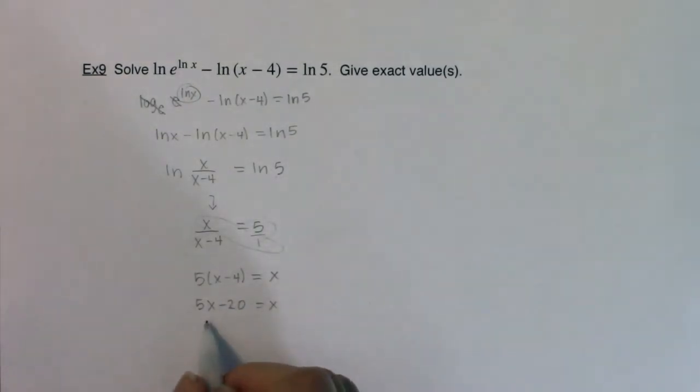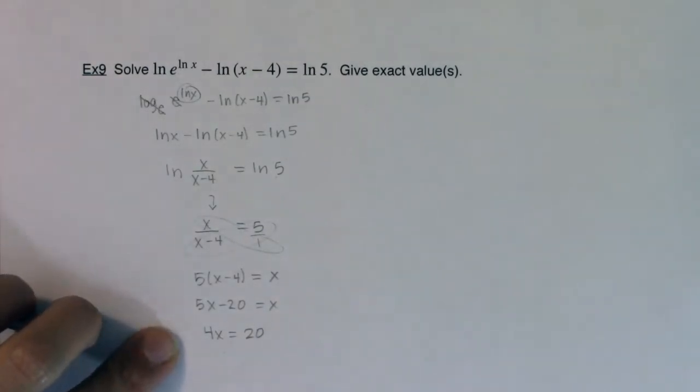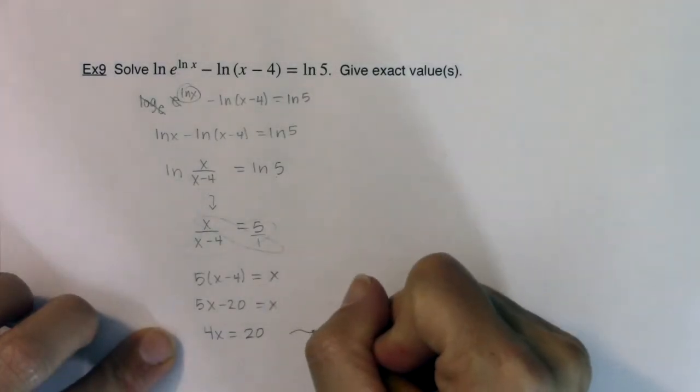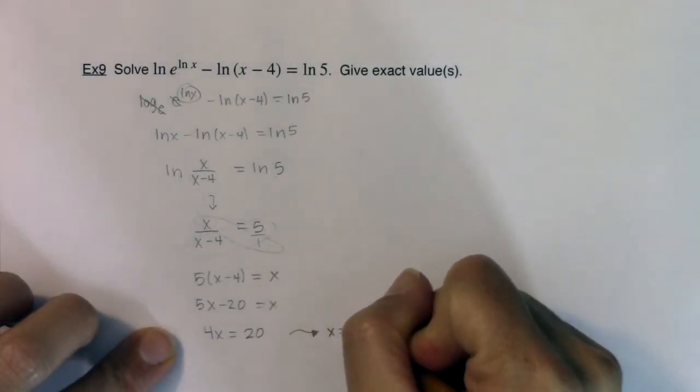And then if I subtract my x, I'm going to get 4x on this side, I get 20 on the right side. So ultimately it looks like I'm looking at x equaling 5 when I go to solve this out. So let me just put this over here. We've got x is equal to 5.